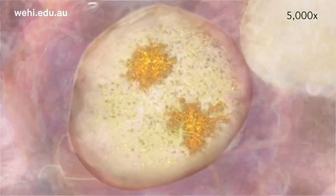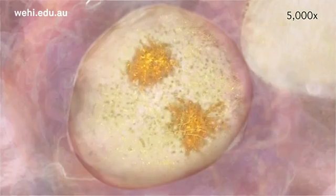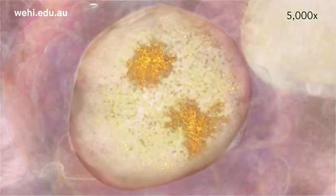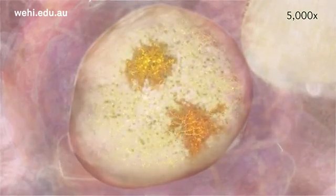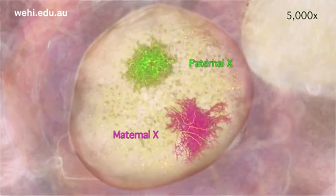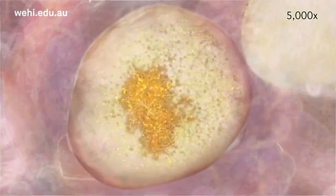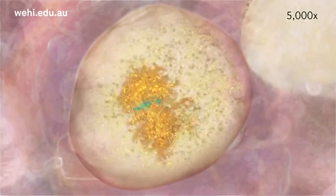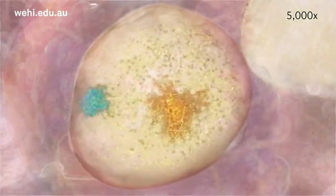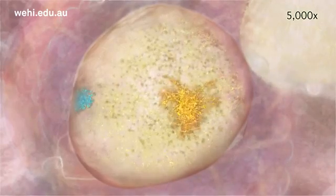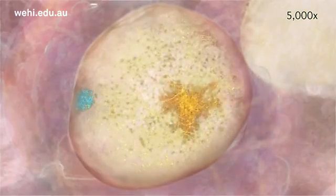Epigenetic inheritance can be visualized by the process of X inactivation. This is a close-up of a single cell from a 100-cell embryo approximately four days old. At this early stage of development, female embryos still have two active X chromosomes — one inherited from the father, the other from the mother. Around this time, the two active X chromosomes interact transiently and one is inactivated, while the other is kept active. This process is mediated by both RNAs and proteins.